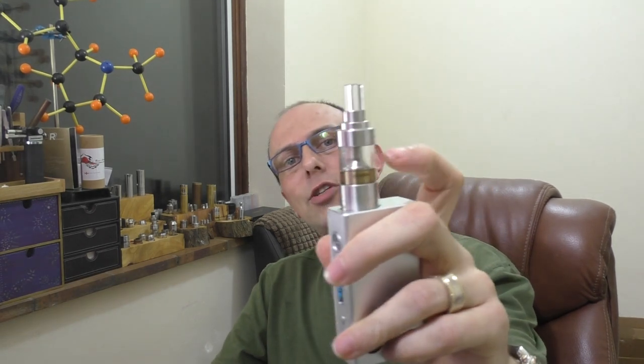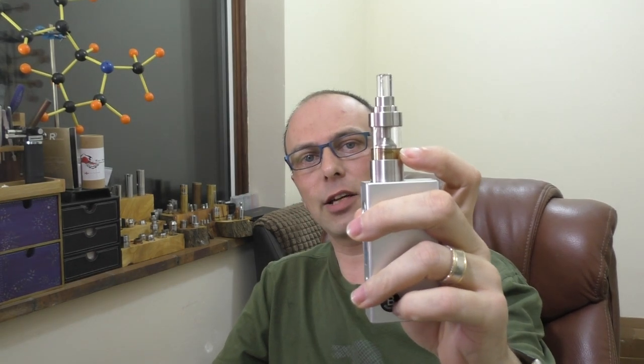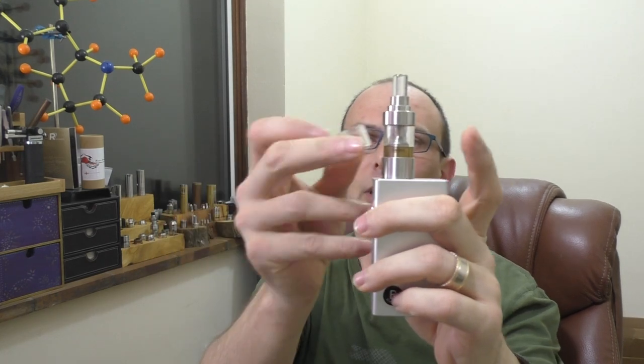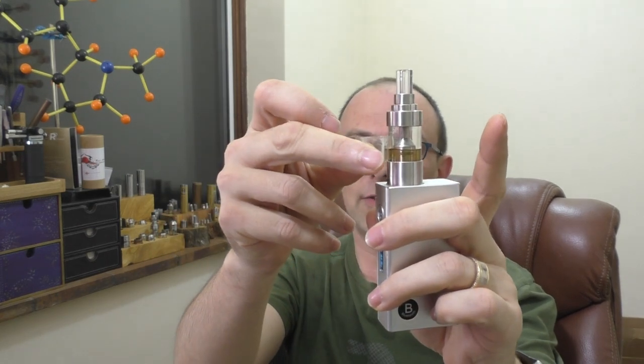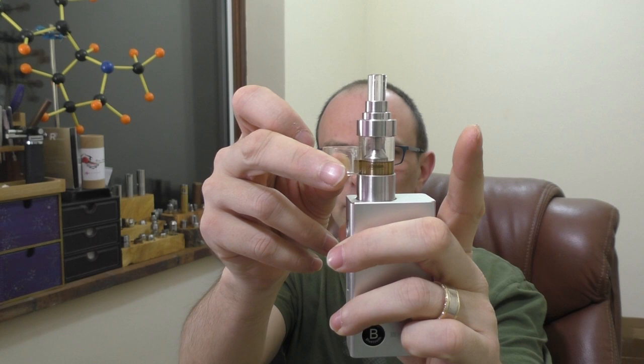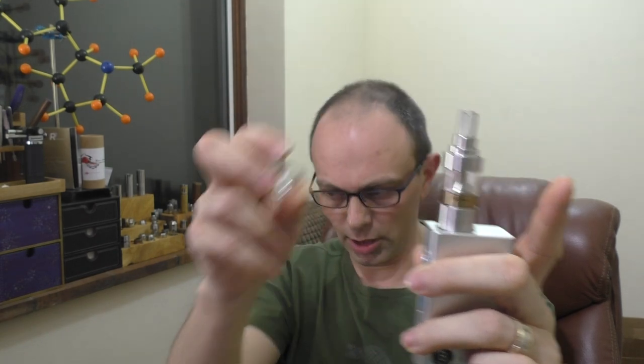It's 304 brushed stainless steel. It comes in the box with two tank sections. This is the larger tank section. It takes 4.2 mils. It comes out of the box with this smaller tank section, which is three mils of juice capacity.